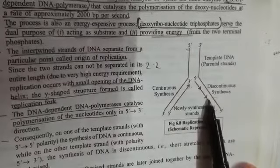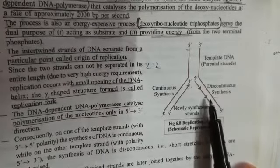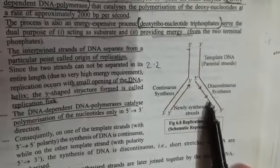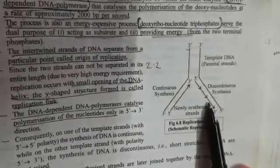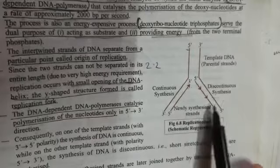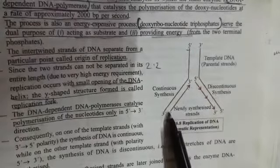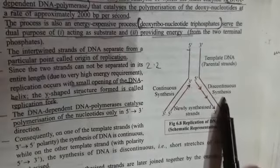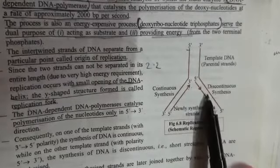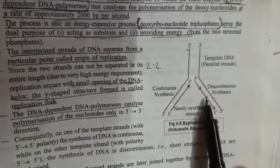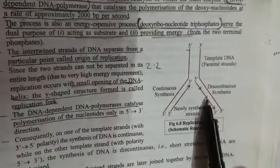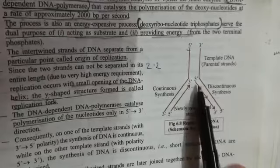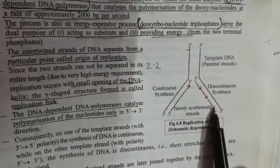The enzyme DNA-dependent DNA polymerase helps in the polymerization of the complementary base pairing. From this diagram, you can understand that here it is a continuous synthesis, while here it is a discontinuous synthesis. These are the Okazaki fragments — small stretches or fragments of DNA which will later be joined together with the help of DNA ligase.